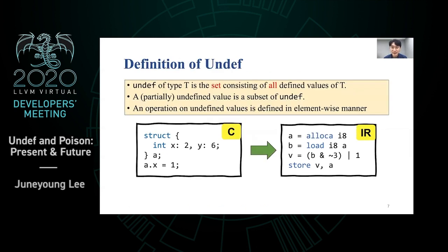With the current undef, we can explain this transformation. Undef is the full set of all defined values — for example, undef of i8 is a set of integers from 0 to 255. We also have partially undefined values, which are subsets of undef. An operation on undefined values is done in an elementwise manner, returning another set of values or a defined value when the result is a singleton set. This formal definition came after discussions between many developers and researchers.